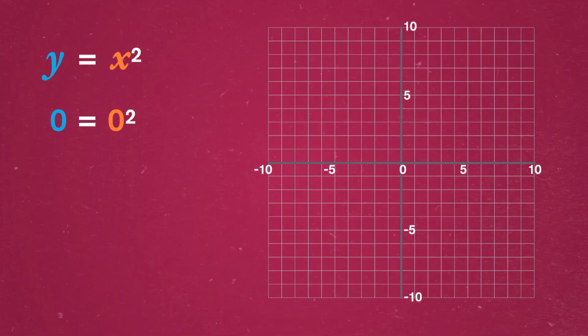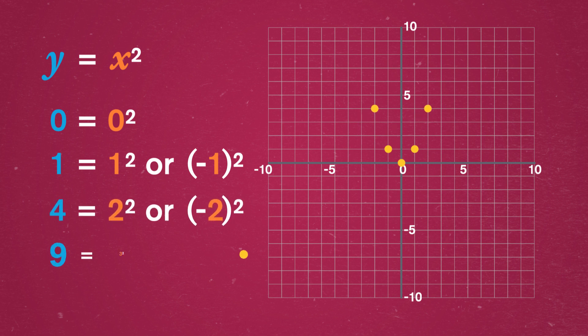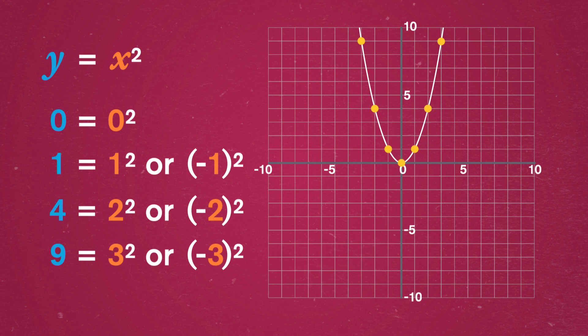No matter what we're graphing, a sure-fire way to get started is to plug in some numbers into the equation as x values, and see what matching y values make the equation true. Zero squared is zero, so x equals zero and y equals zero make our equation a true sentence. Then one squared is one, and negative one squared is also one. Two and negative two squared are four. Three and negative three squared are nine. And we can keep going until we're sure of the general shape – if we plug in bigger positive or negative x values, we will always get bigger y values. Drawing a line connecting the dots is really just imagining we've plugged in all the numbers and plotted all the data.